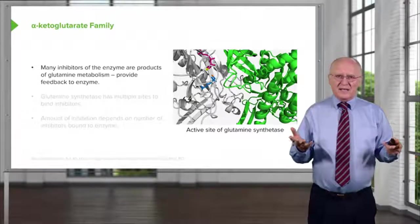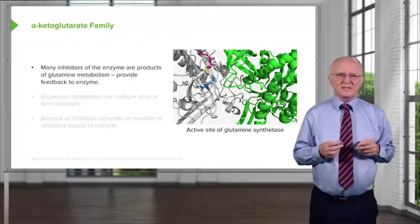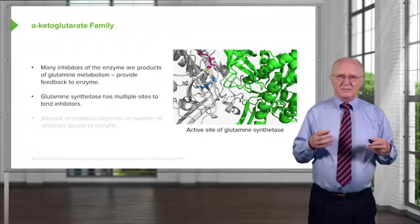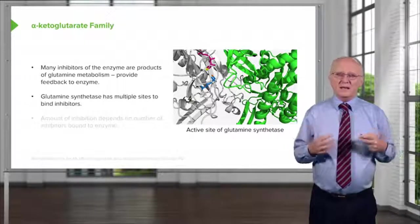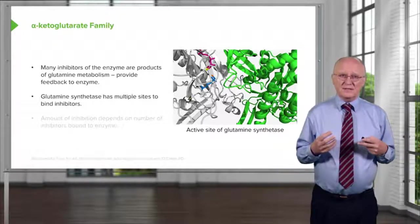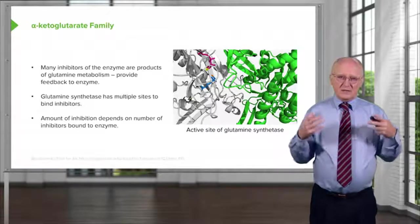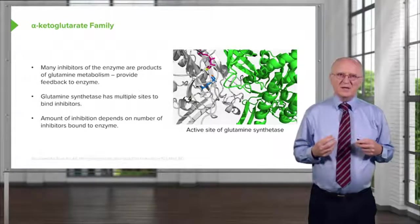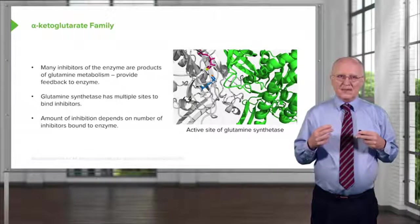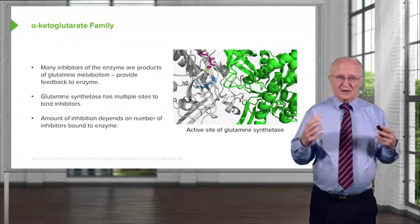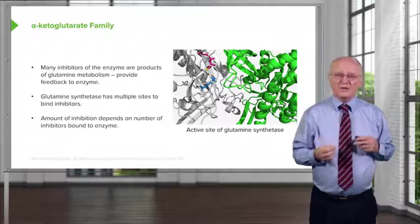The alpha-ketoglutarate family is important because we have to control how many different things are made, particularly glutamine, which is central to the metabolism of all amino acids. Glutamine synthetase has multiple sites — not for making glutamine, but for binding inhibitors. There is one site for each inhibitor. The degree of enzyme inhibition is a function of how many sites are bound. More inhibitors present means more sites bound and greater inhibition. This provides up-down regulation rather than simple on-off control, making the enzyme more or less active depending on how much these other molecules are needed.